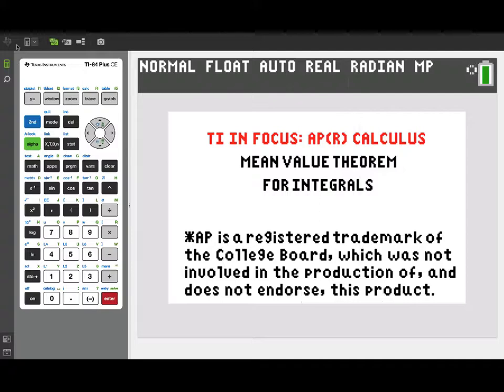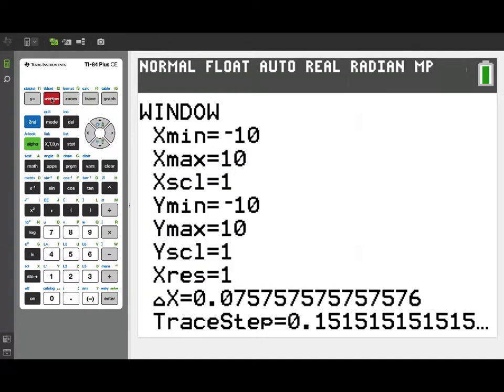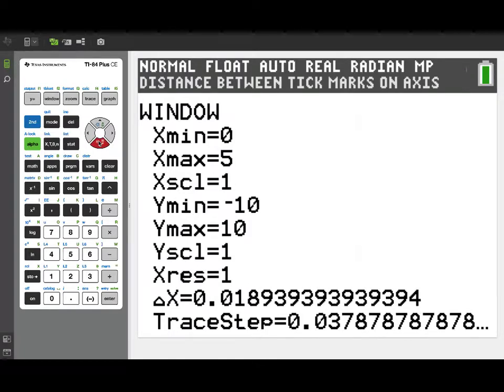We're going to take a look at the mean value theorem for integrals using the TI-84. The function you see in Y1 is the rate at which fish are leaving a lake. This scenario appeared on question one on both the AB and BC exams in 2019. We're interested in finding the average value of this function over the time interval 0 to 5. So I'm going to my graphing window and setting xmin and xmax to the 0 and 5 time limits. Now we'll go ahead and graph this and take a look at our function.